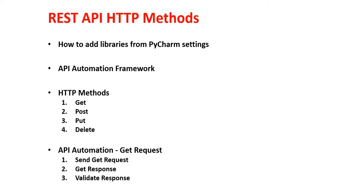In this video we will cover REST API HTTP methods. We will also cover how to add libraries from Python, then we will create an automation framework for REST API automation. We will cover different HTTP methods and also cover GET requests using Robot Framework REST API automation — sending the request, getting the response, and validating that response.